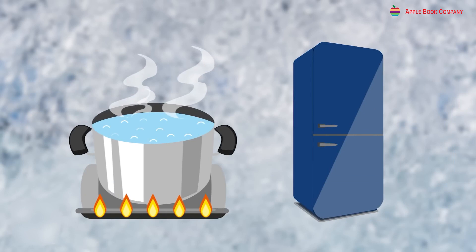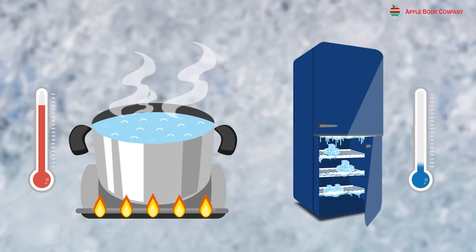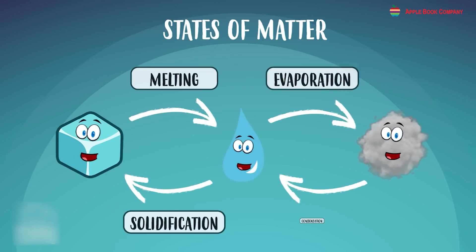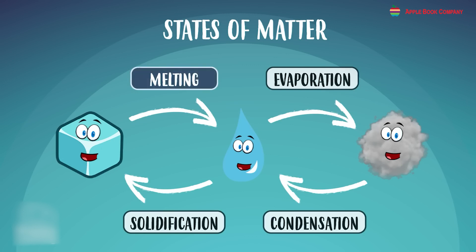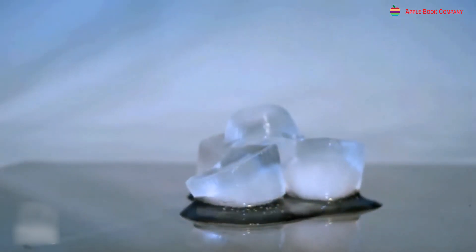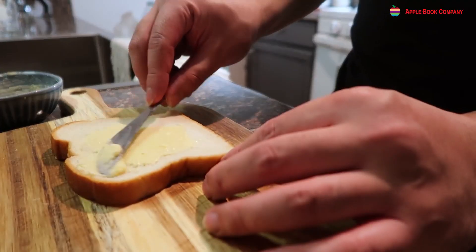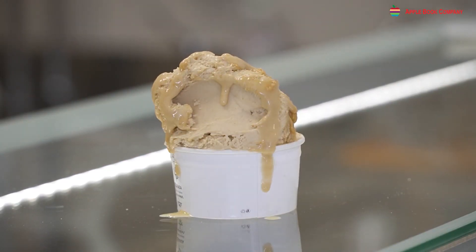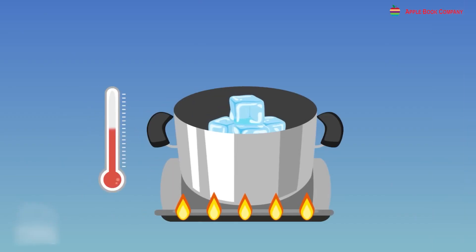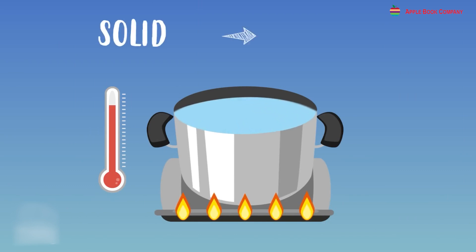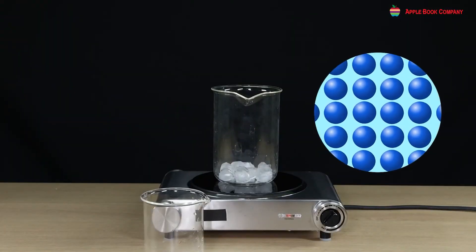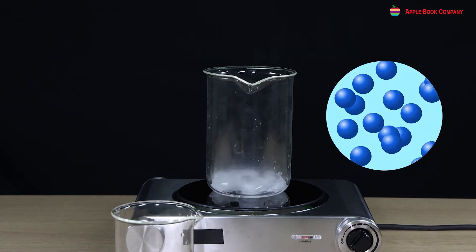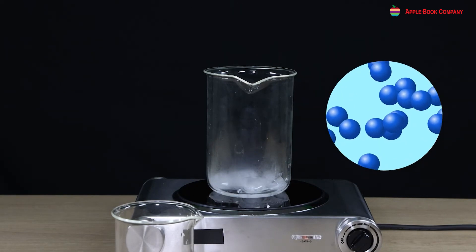Change of States. We have already seen how water changes into water vapor on heating and into ice on cooling. The states of matter can be changed when the matter is heated or cooled. Melting: on heating, a solid melts to form a liquid. What happens when butter is put on a hot toast? It melts. Likewise, if you leave ice cream outside the freezer for some time, it melts. The process by which a solid changes into a liquid on heating is known as melting. When solids are heated, the molecules begin to vibrate faster and are able to overcome the strong force of attraction between themselves, and they begin to move around.